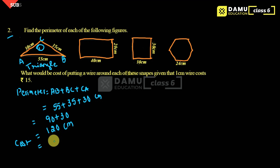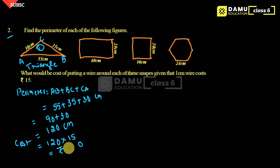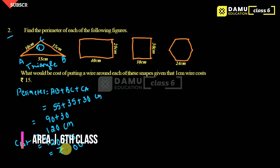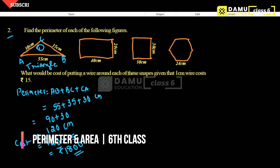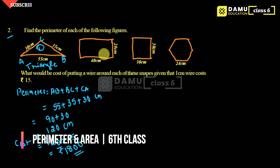Now for the cost: 1 centimeter costs 15 rupees, so for 120 centimeters the cost is 120 into 15. That gives us 1800 rupees as the cost of wire for the triangle.